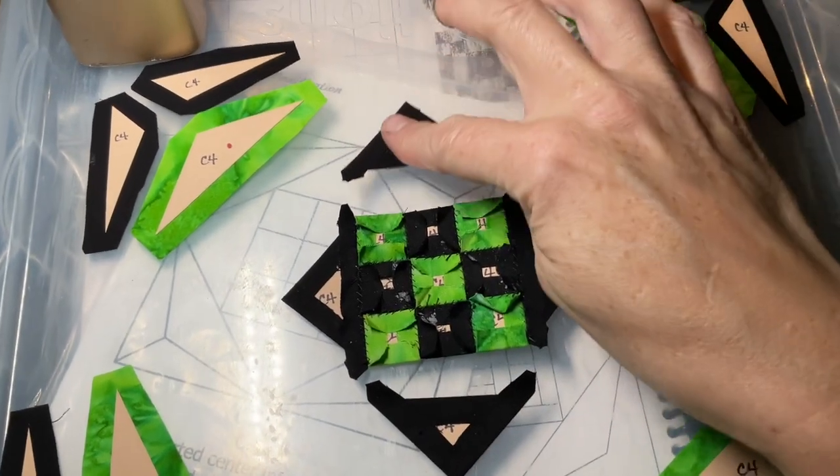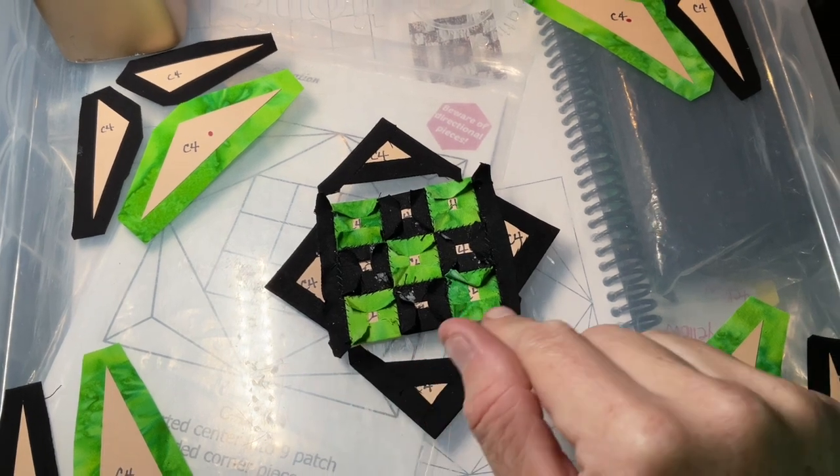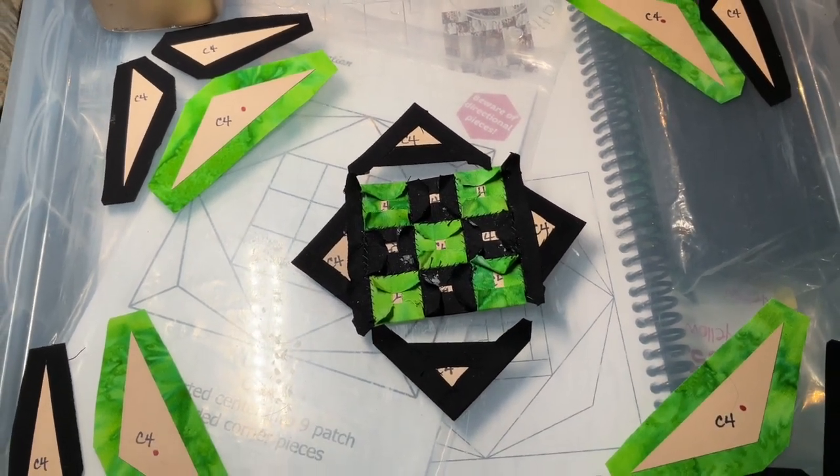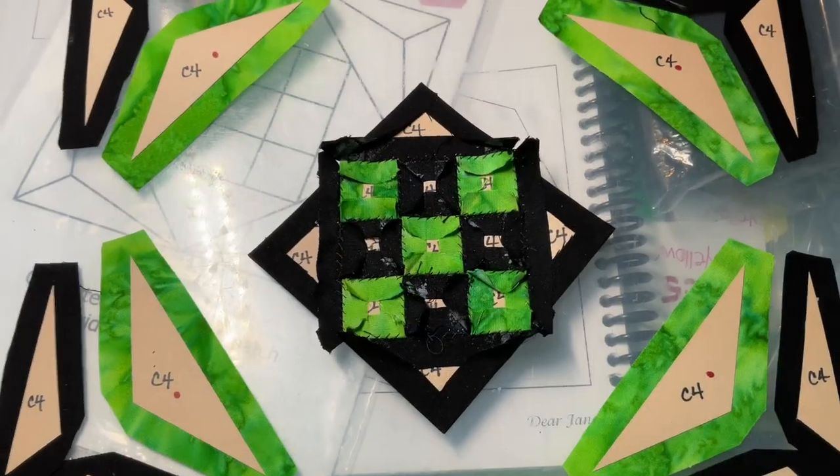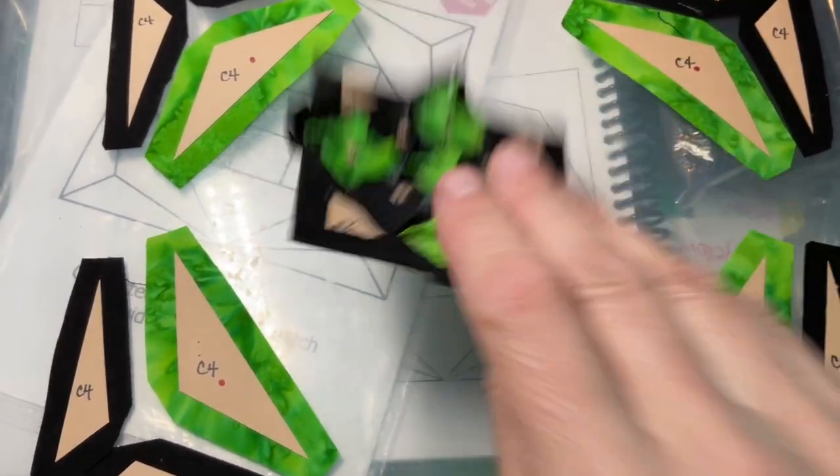Now I'm going to go ahead and attach the other two, and you can see how the tags will nest into each other, which is why I basted them opposite. So I finished attaching all four of the triangles. This is what you should have at that point.